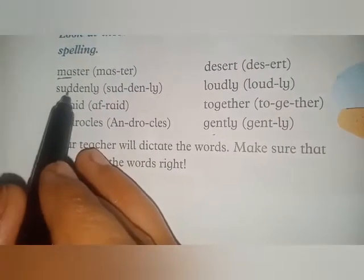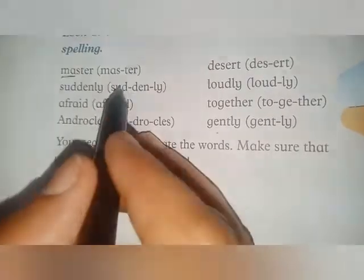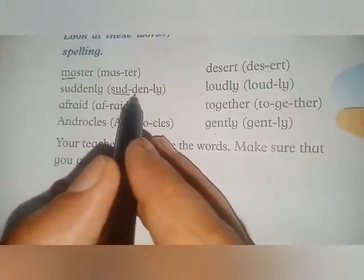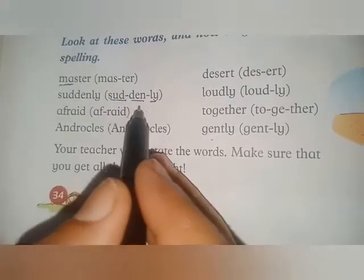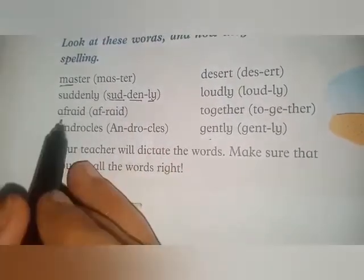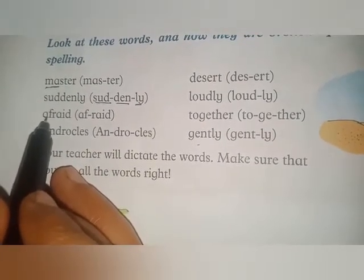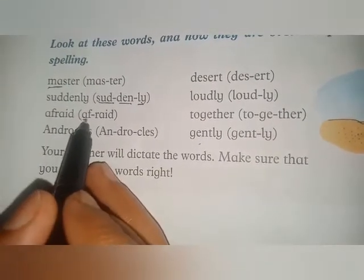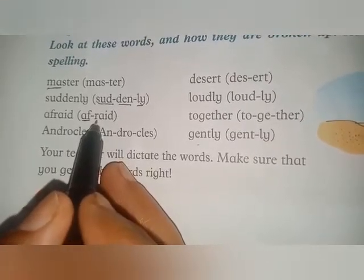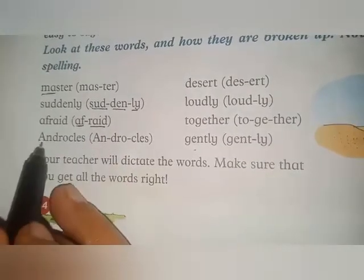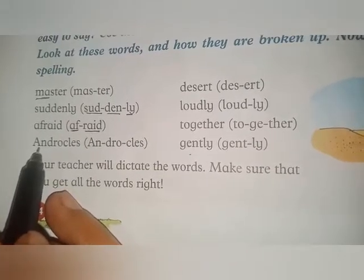Now the second word: 'suddenly'. S-U-D — 'sud', D-E-N — 'den', L-Y — 'ly': suddenly. Now the third word: 'afraid'. A-F-F-R-A-I-D: afraid.